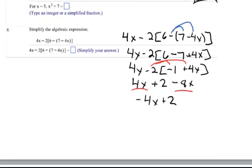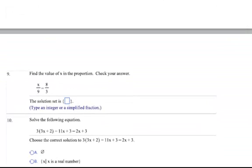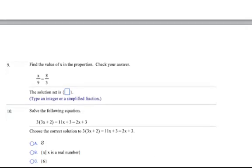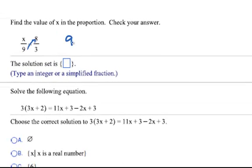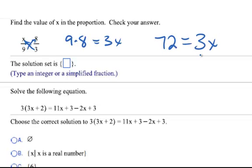For number nine, it just wants us to find the value of x in the proportion, and then we need to check our answer. To do that, we're just going to want to cross multiply. Cross multiply means taking, because it is a fraction equals a fraction, we can do that. There's nothing else extra beyond these two fractions. So we're going to do 9 times 8 and 3 times x. So we have 9 times 8 equals 3 times x, which is 72 equals 3x. And then to solve, we're going to divide both sides by 3. So we cross multiply and divide. And whenever we simplify 72 over 3, we're going to get 24 equals x.